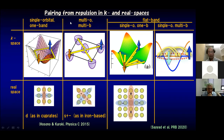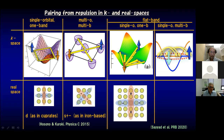In this table, I classified the pairing from repulsive interactions in k-space and in real space. This column is for single-orbital one-band systems, this is for multi-orbital multiband systems, and these are flatband systems — either single-orbital one-band or single-orbital multiband. This is the most usual case where you've got very well-defined nesting vectors, and Cooper pairs can virtually hop across these nesting vectors, and we end up with d-wave pairs if we have cuprates.